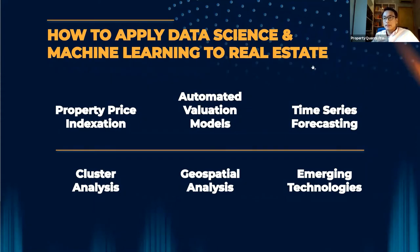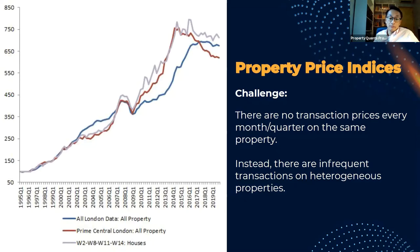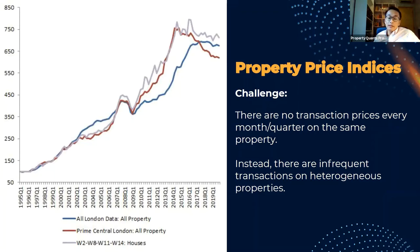The first application we'd like to talk about is property price indexation. In the stock market you have identical assets traded really frequently — Google shares changing hands many times a day, many times a minute — so it's pretty easy to get a sense of where the overall market is by combining recorded transaction information to produce an overall index of the market or a particular sector.